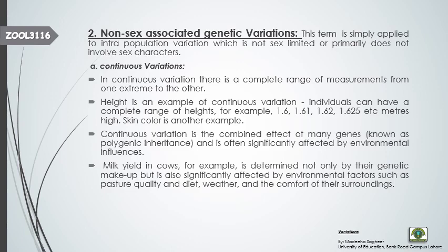Because continuous variations are produced by the effect of more than one gene, they are known as polygenic inheritance. In addition to genes, they are also affected by certain environmental factors. For example, milk yield in cows is determined not only by genetic makeup but also by environmental factors such as quality of diet, weather, and comfort of their surroundings. These are called continuous variations — we have a very broad range of measurements, even measurable in decimals.